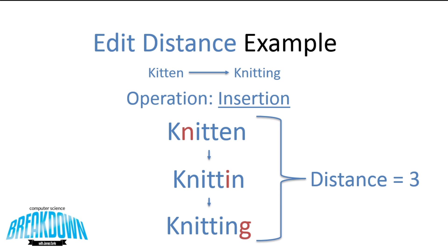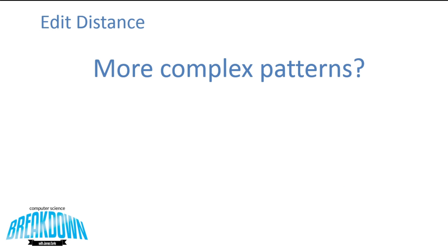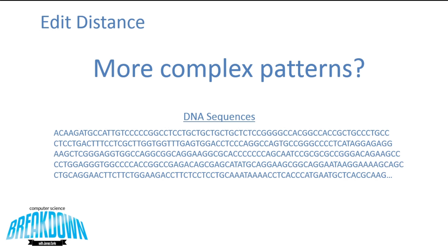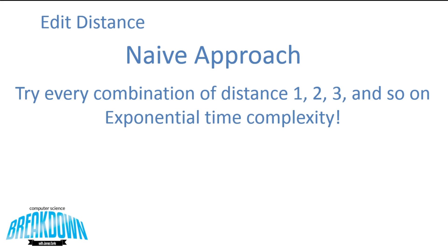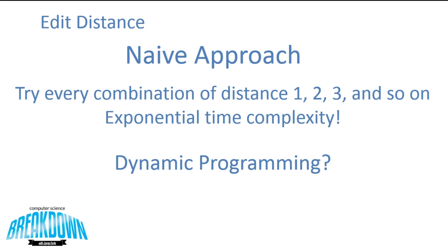We don't know if this is an optimal distance because we just did this problem off the top of our heads. What if we were trying to study something more complex, such as DNA sequences? There's simply no way we could do this manually. A naive approach would tell us to try every combination of every distance, but this is exponential. So we can check if this edit distance problem is eligible for a dynamic programming solution.